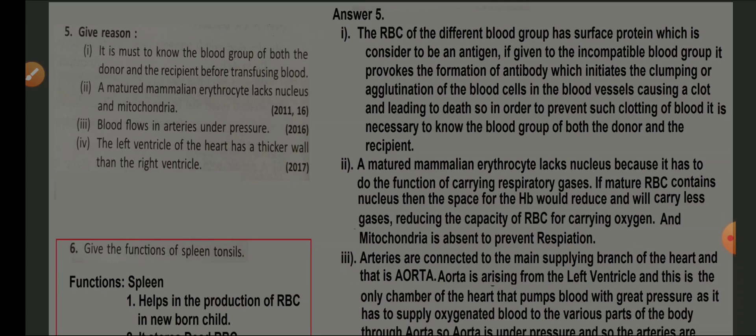Reason two: mature mammalian erythrocytes lack a nucleus and mitochondria. The nucleus is absent because it needs space for hemoglobin to carry respiratory gases — if RBCs contained a nucleus, the space for hemoglobin would reduce, decreasing oxygen-carrying capacity. Mitochondria are absent to prevent cellular respiration within the RBC, preserving its function of carrying respiratory gases to cells.